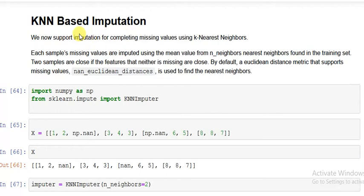KNN-based imputation supports completing missing values using k-nearest neighbors. Each sample's missing values are imputed using the mean value from n_neighbors nearest neighbors found in the training set. You decide how many neighbors to use, then the mean of those values fills in the missing data. Two samples are close if the features that neither is missing are close. By default, a Euclidean distance metric that supports missing values is used to find nearest neighbors.